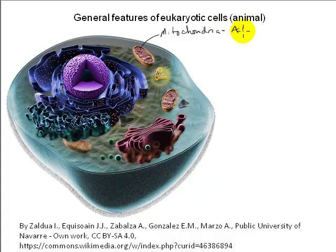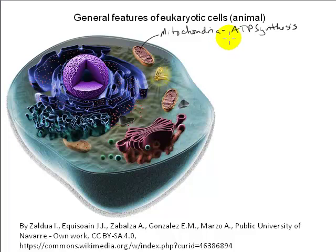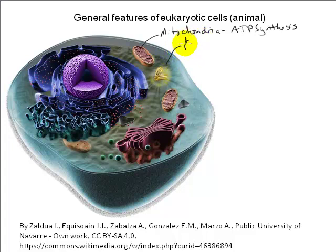Mitochondria are commonly depicted as little kidney-bean-shaped structures, though that's not really accurate. They are also bounded by a double membrane consisting of two phospholipid bilayers. Mitochondria are the sites of the vast majority of ATP synthesis in eukaryotic cells, so they are commonly referred to as the powerhouses of the cell. We'll investigate this metabolic function in more detail when we talk about cellular respiration.